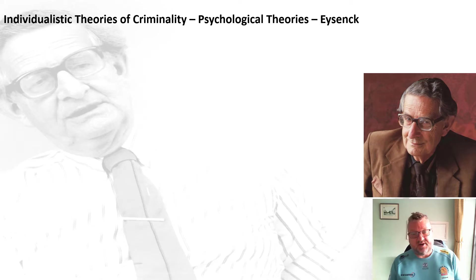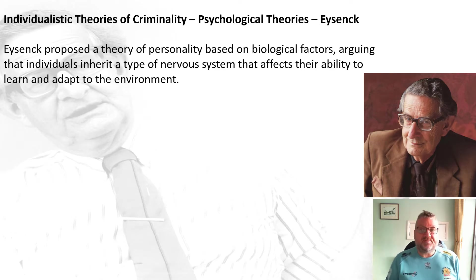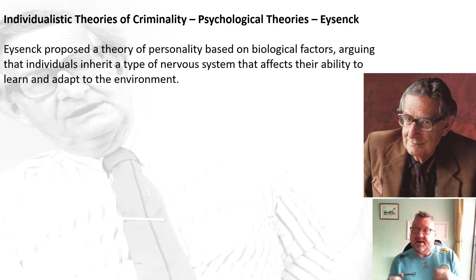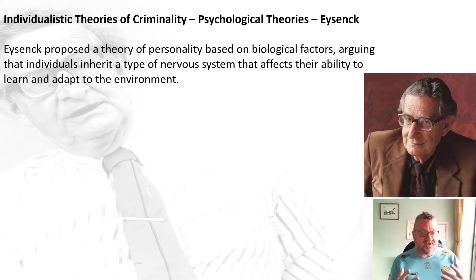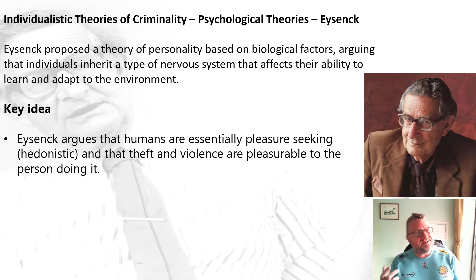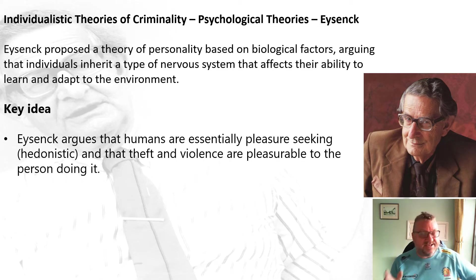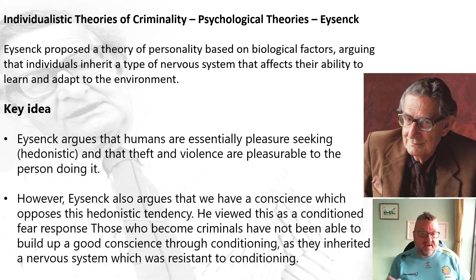Eysenck thinks that your personality is obviously based on biological factors. He argues that individuals inherit their nervous system genetically from their parents, and that nervous system affects our ability to learn and adapt to the environment. His key idea is that all humans are pleasure-seeking — we're hedonistic at heart — and people who steal, use violence, and break the law do it because it is pleasurable to them.